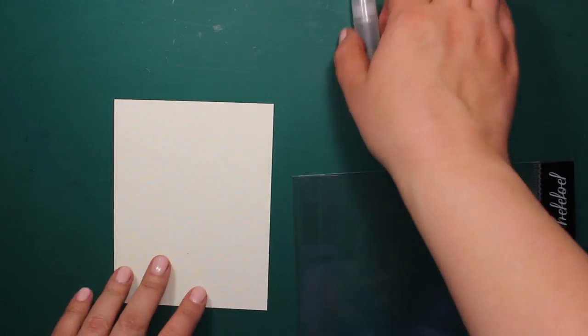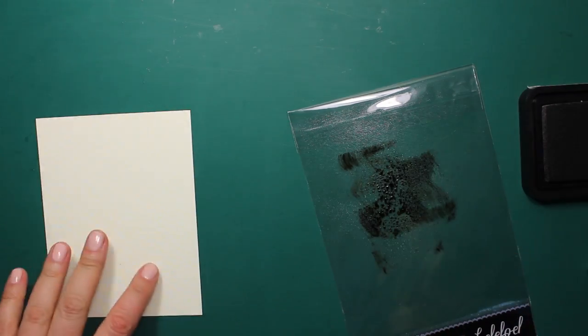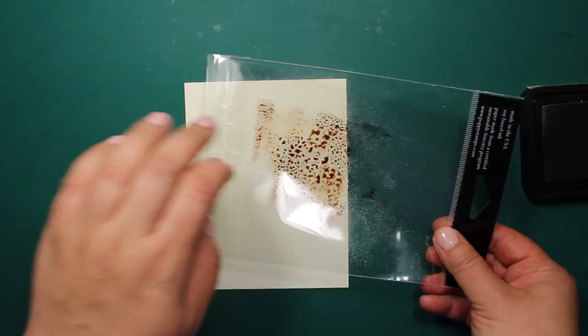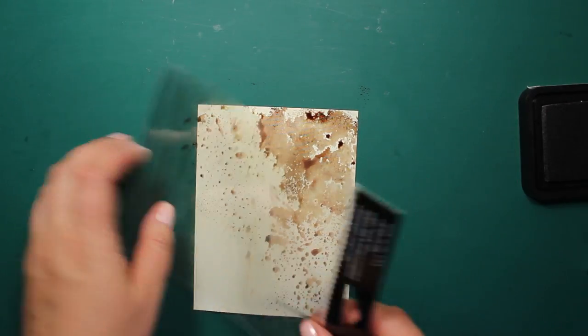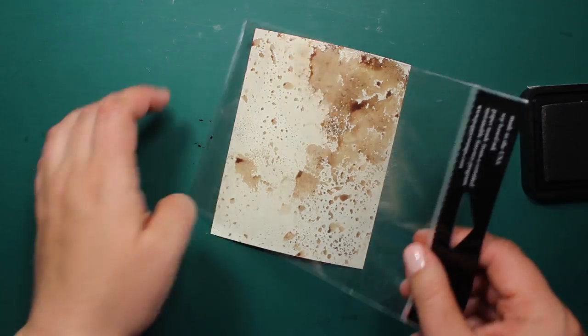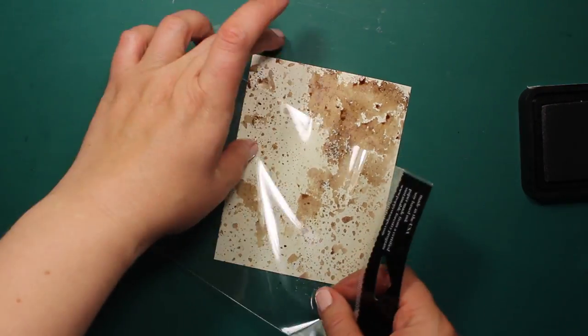I'm starting off with a piece of ivory cardstock of standard A2 size. I'm going to use a plastic bag to apply some ground espresso distress ink onto directly from the pad, then I'm spritzing it with water and transferring the ink onto my piece of cardstock. This will create splatter effect.